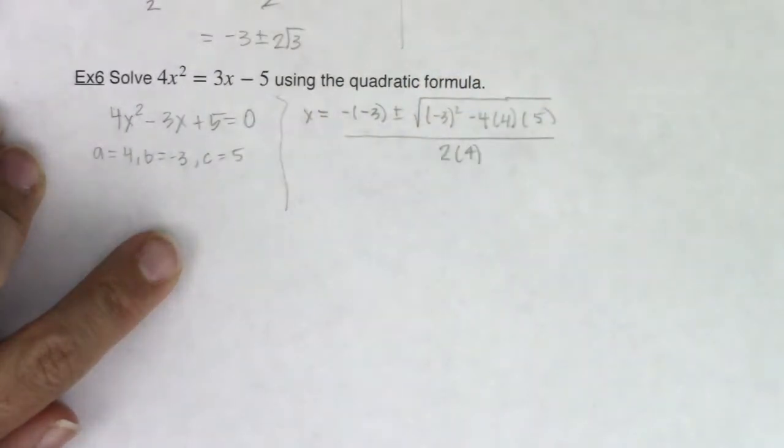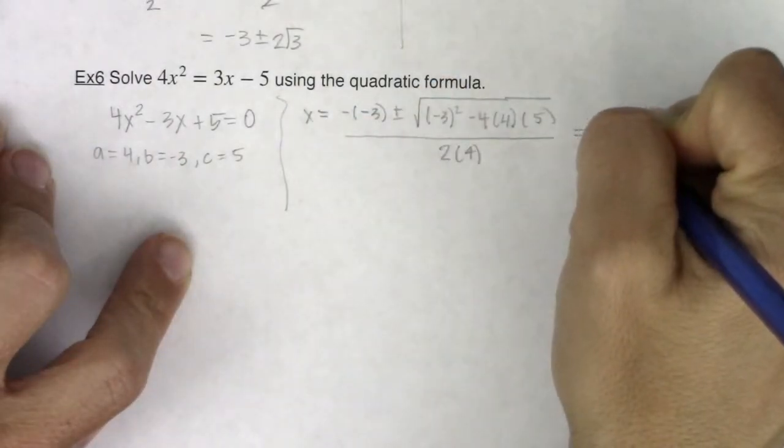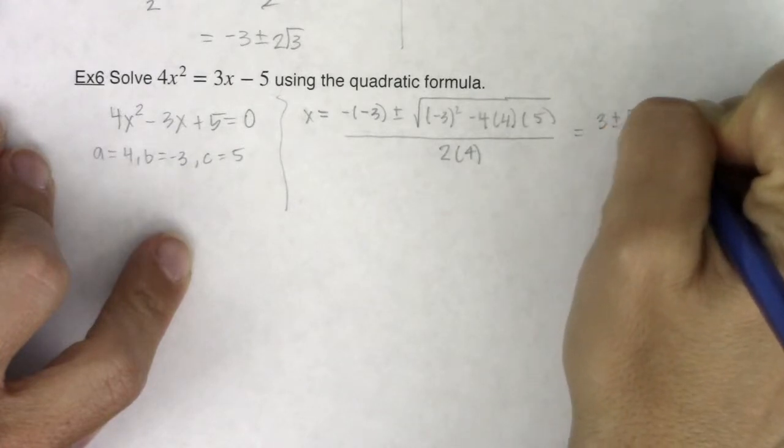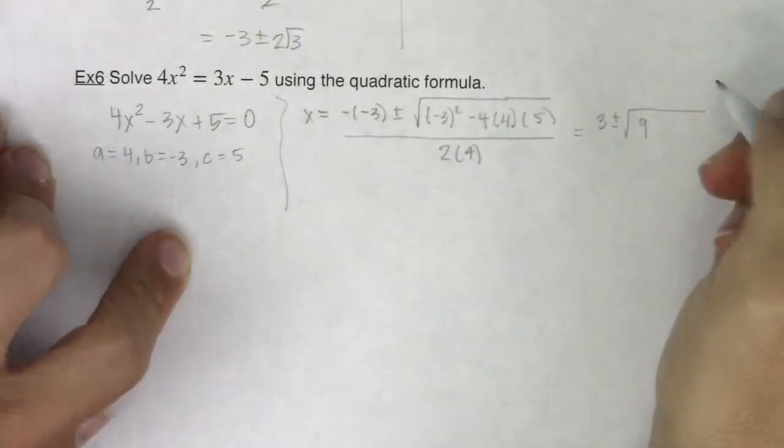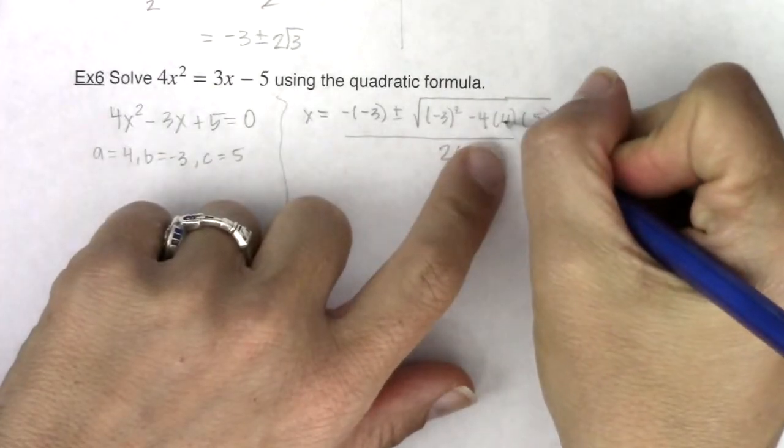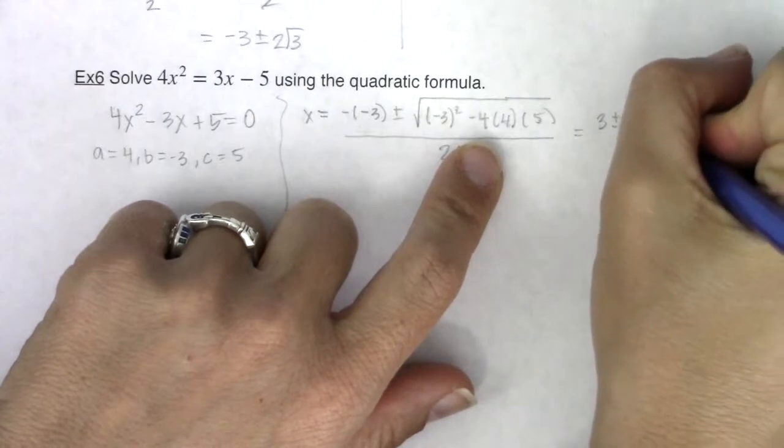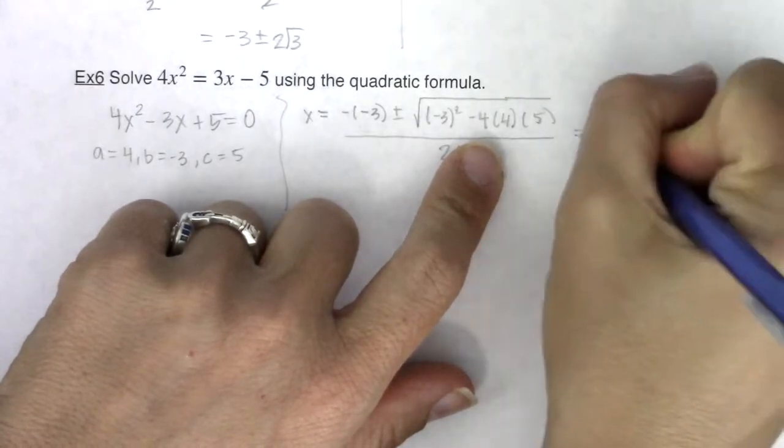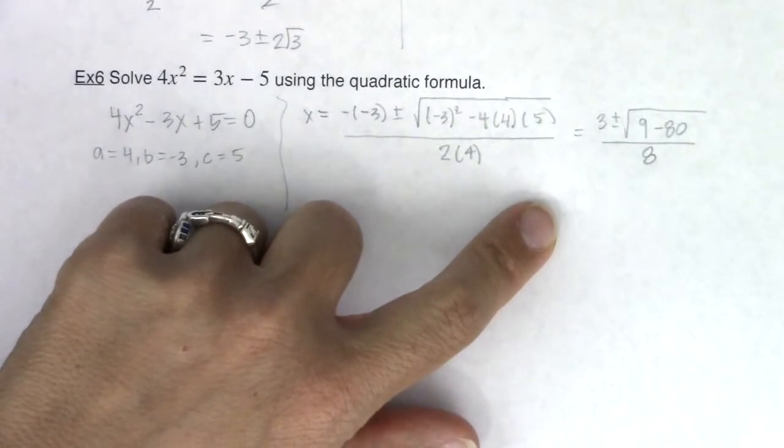Let's start simplifying that a little bit. So if I look at this, a negative of negative 3 is positive 3 plus or minus. 3 squared or negative 3 quantity squared is 9. 4 times 4 is 16. 16 times 5 is 80, so I have 9 minus 80. And I'm going to divide that by 2 times 4, which is 8.